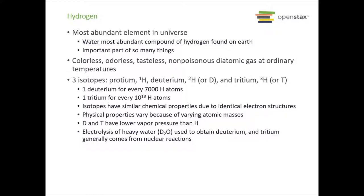It has three isotopes: protium, which is the normal hydrogen with one proton in it; deuterium, H-2, which has a proton and a neutron and is also abbreviated with a D; and tritium, which is heavy hydrogen, with one proton and two neutrons in the nucleus, also abbreviated with a T. We get one deuterium for about every 7,000 hydrogen atoms, and one tritium for every 10 to the 18th hydrogen atoms, so tritium is very, very rare.